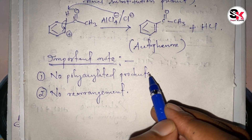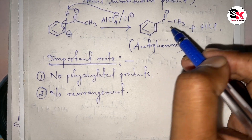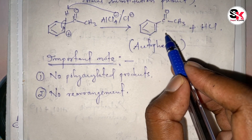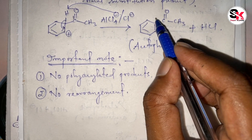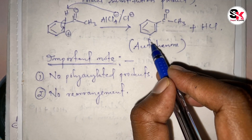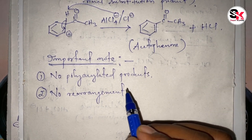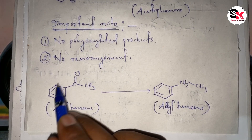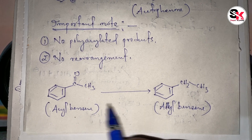Important note: unlike polyalkylation, we will not get a polyacylation product in Friedel-Craft acylation reaction. This is because the product formed is a ketone, and all ketones are meta-directing electron-withdrawing groups. They withdraw electron density from benzene and deactivate the benzene ring for further substitution reaction. So instead of a polyacylated product, we get only the monoacylated product. Also, we will not get any rearrangement product.